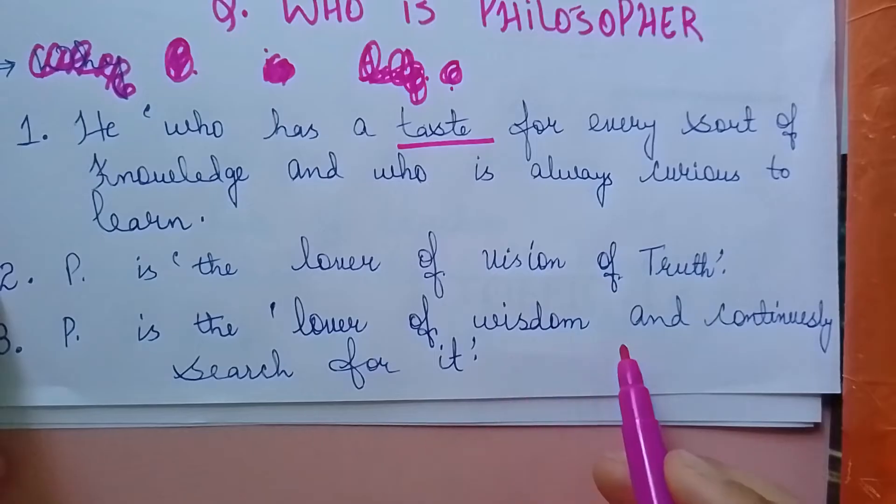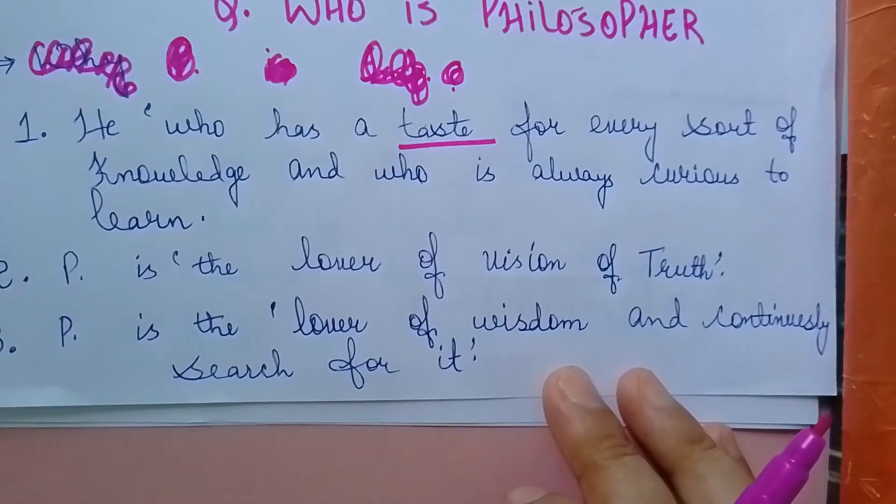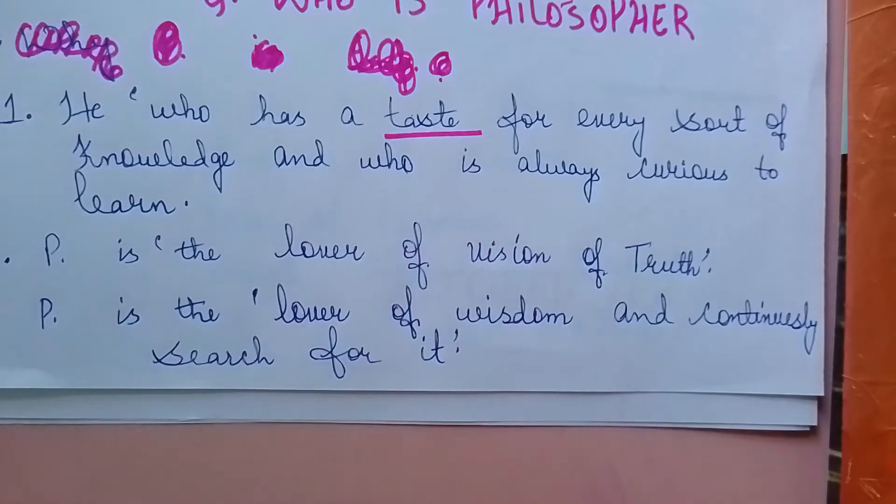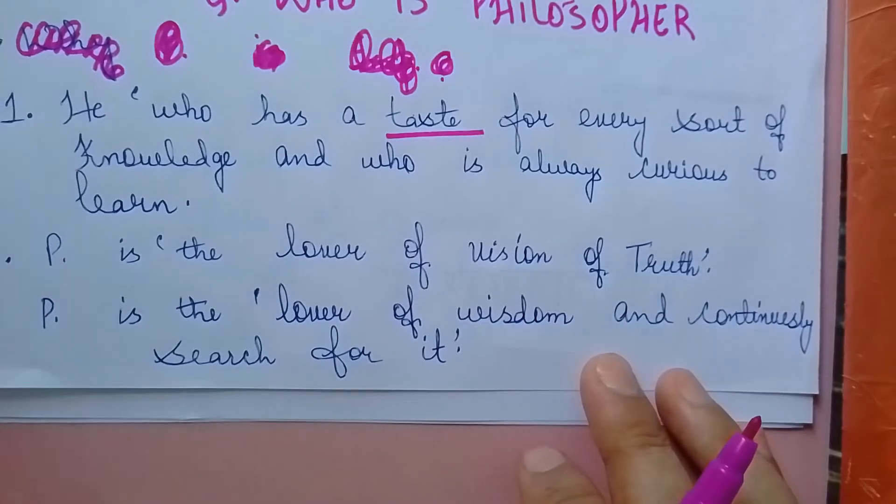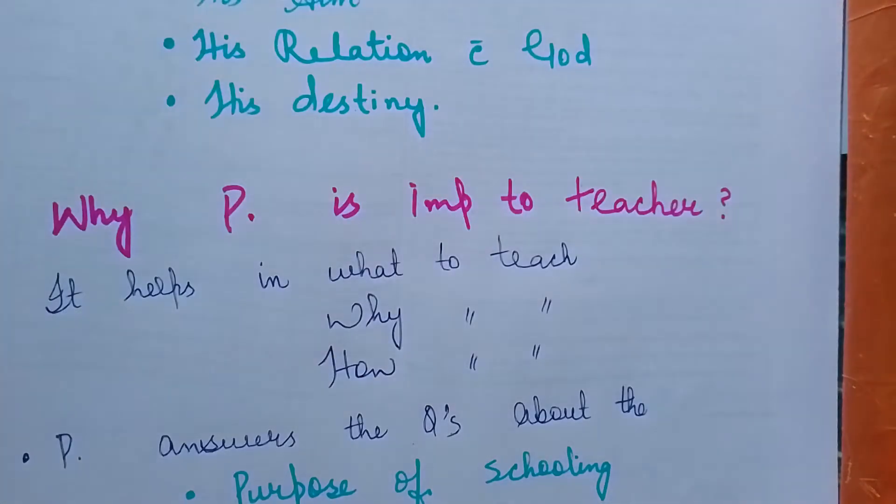A philosopher is the love of wisdom and continuously searches for it. The philosopher is always in love with wisdom. He always wants to know more and more. He is never satisfied. A philosopher always has doubt and always criticizes, but in a healthy way.